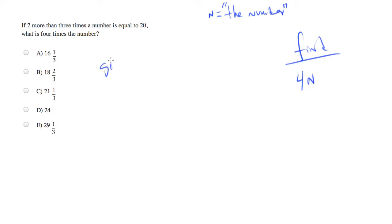And we've been given some prose, so we should translate. 2 more than 3 times the number is equal to 20. Well, we've got 3 times the number, and we've got 20.